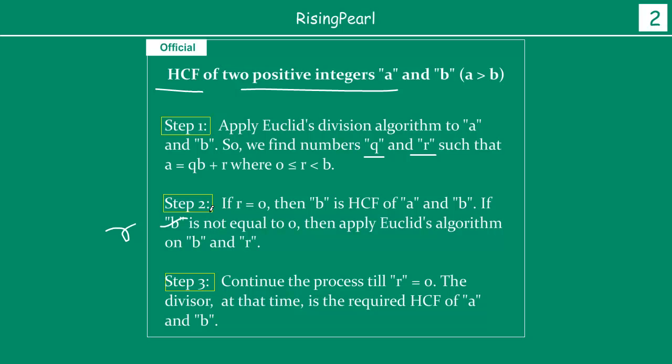That means at this point the original b becomes the dividend and the remainder becomes the divisor. We continue this process till r equals 0. If r equals 0 at that point whatever is your divisor that becomes the HCF of a and b.